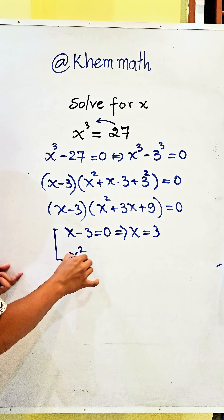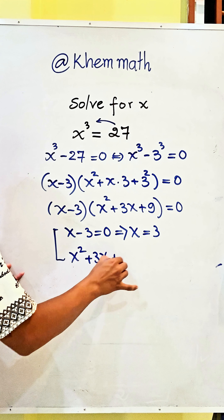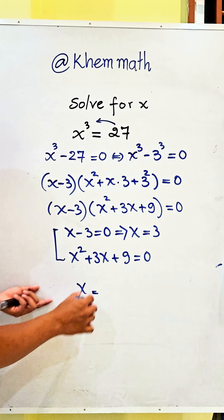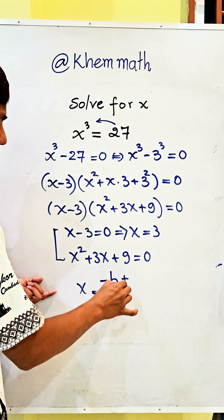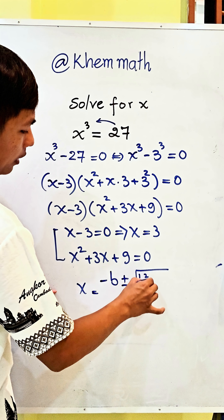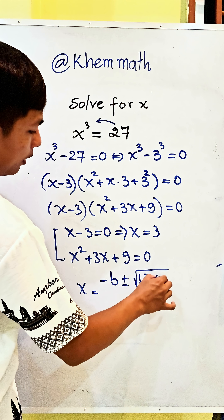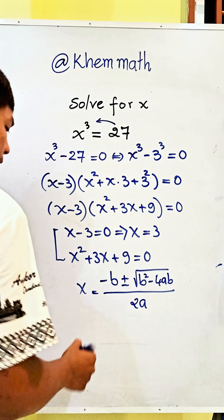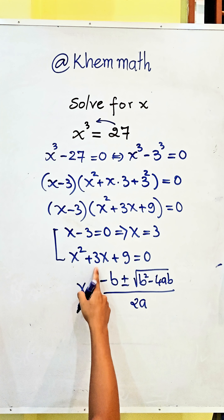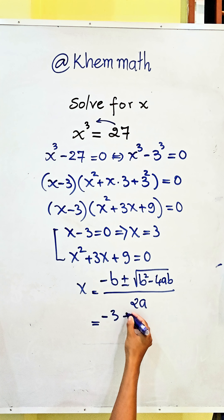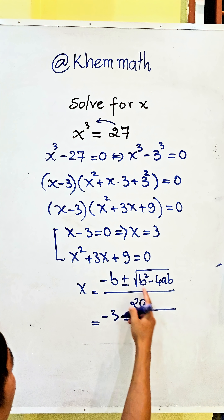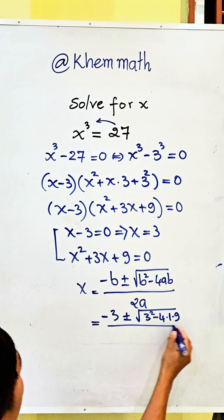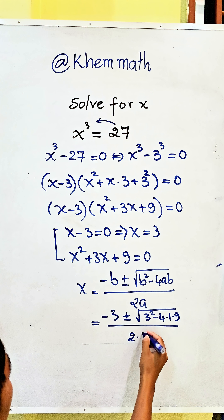And here x squared plus 3x plus 9 equals 0. We get x equals negative b plus and minus square root of b squared minus 4ac, divide 2a. Here b is equal to 3, so we get negative 3 plus and minus square root of 3 squared minus 4 times 1 times 9, divided by 2 times 1.